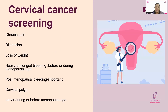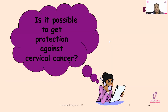Other indications for cancer screening include chronic pain, distension, loss of weight, heavy or prolonged bleeding, post-menopausal bleeding — bleeding after the menstrual cycle has stopped — any growth in the mouth of the uterus, or a tumor before the menopausal age. These symptoms are more commonly seen in later age groups, given that HPV-to-cancer progression takes about 10 years.